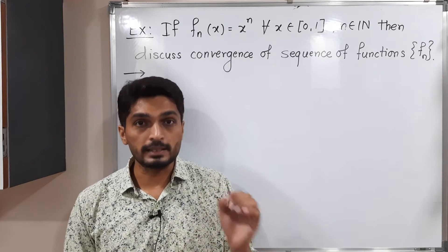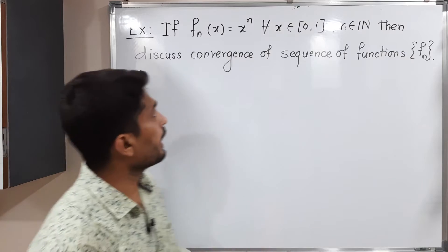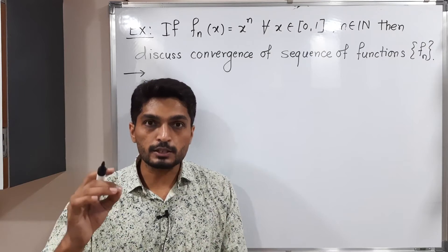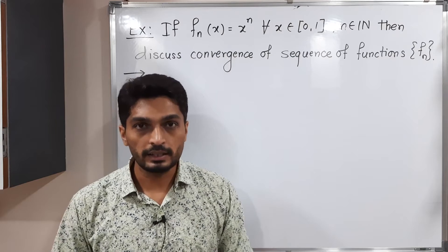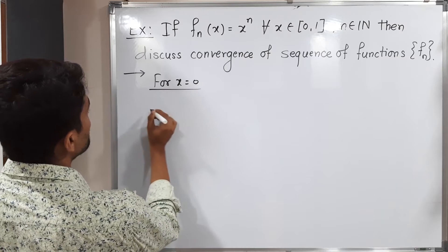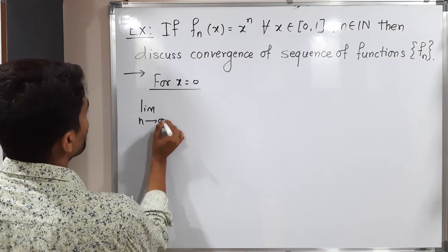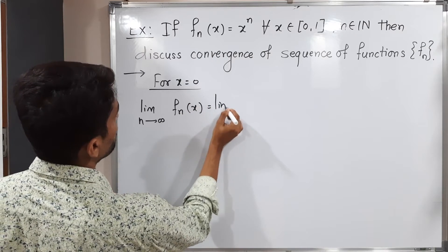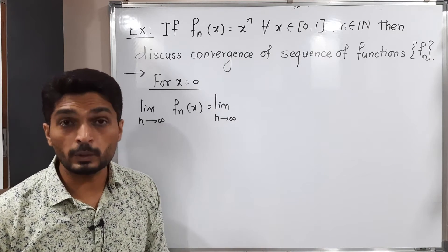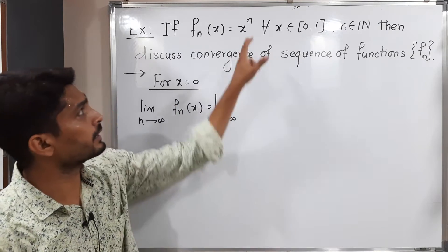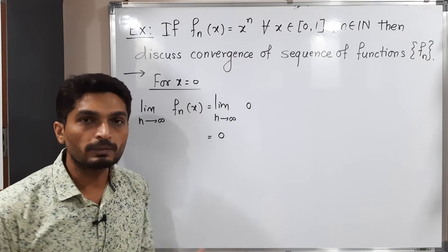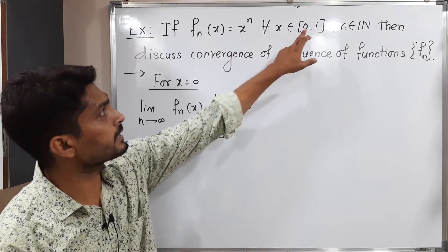Let us first find the pointwise limit of the sequence of functions. We have the closed interval [0,1], so we first discuss the boundary points and then consider points lying in the interior. For x = 0: the limit as n→∞ of fn(x) = limit as n→∞ of x^n. Putting x = 0, we get 0^n = 0, which is constant. So for x = 0, the limit is 0.